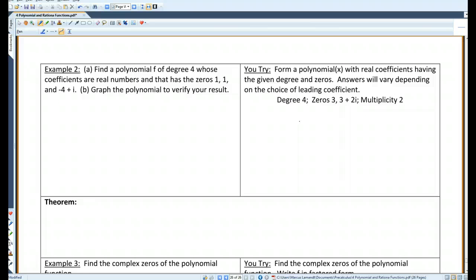Find a polynomial f of degree 4 whose coefficients are real numbers. It has the zeros 1, 1, and negative 4 plus i. And then we're going to graph the polynomial to verify the result. Since negative 4 plus i is a zero, by the conjugate pairs theorem, negative 4 minus i must also be a zero.